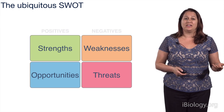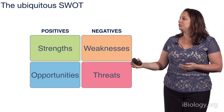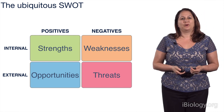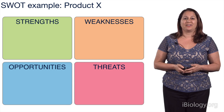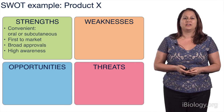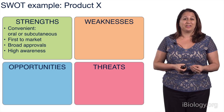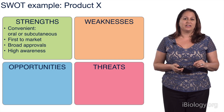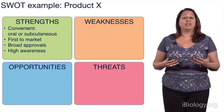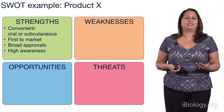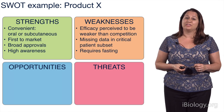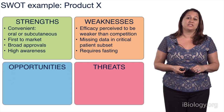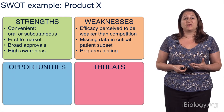Let's take an example SWOT. Say I'm a pharmaceutical company wanting to sell product X. Strengths: my product is very convenient — the patient can choose between oral or subcutaneous formulations. We were also first to market with broad approvals, giving us a lot of market share and high awareness. Weaknesses: our efficacy is perceived by customers to be weaker than the competition, we're missing data in a key patient set, and our product requires fasting before administration, making it a little less convenient than we'd like.